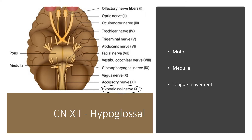Cranial nerve 12 is the hypoglossal nerve. It has a motor function only, is also located at the medulla, and is involved in tongue movement.